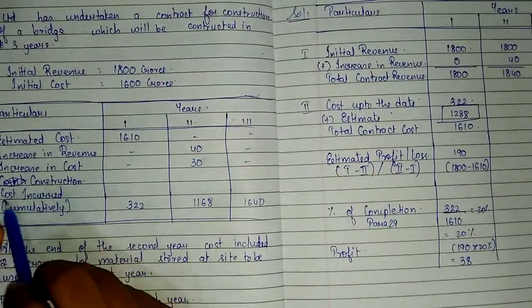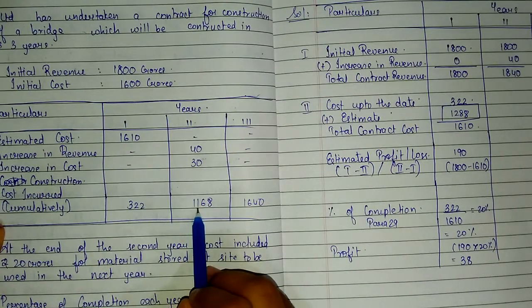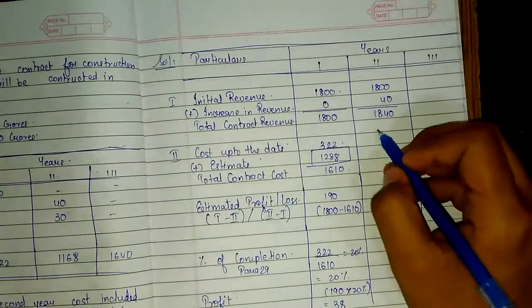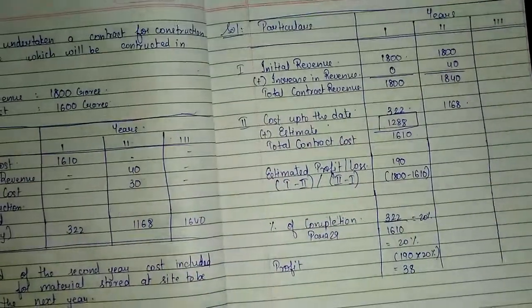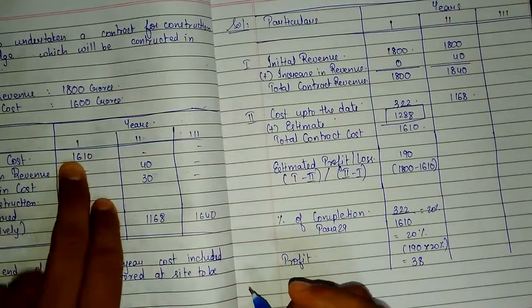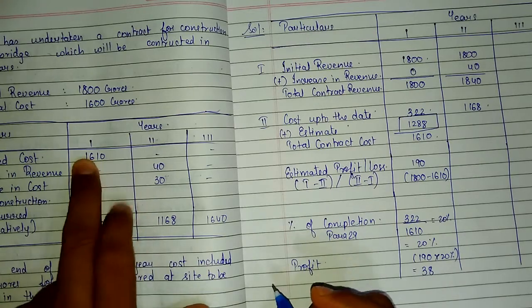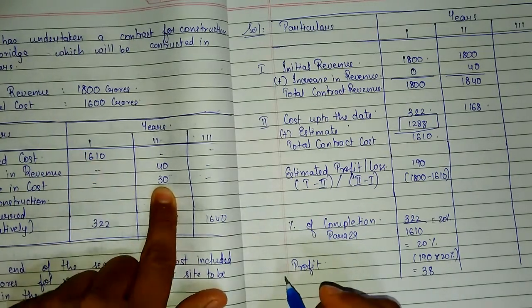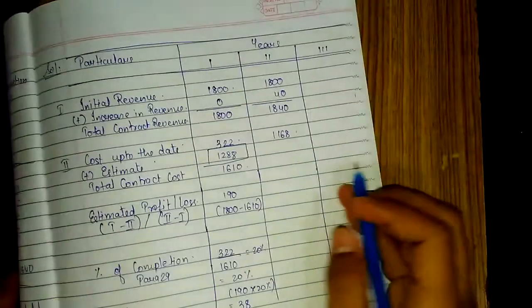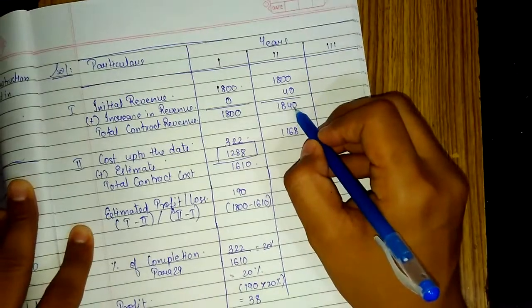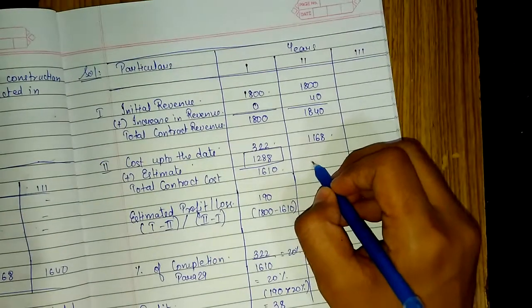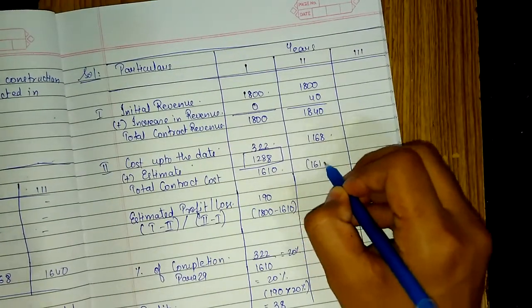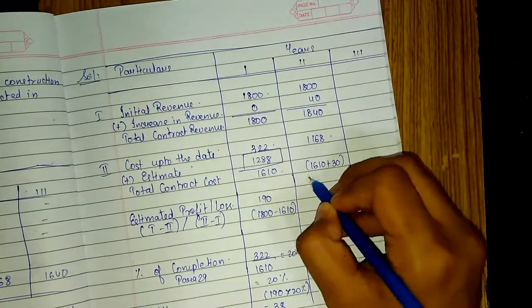For Year 2, the construction cost incurred cumulatively up to date is 1168 crores. The estimated cost was 1610 crores, but there is an increase in cost by 30 crores. So the revised estimated total contract cost is 1610 plus 30, which comes to 1640 crores.